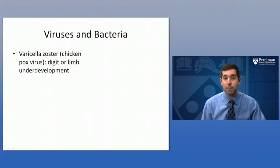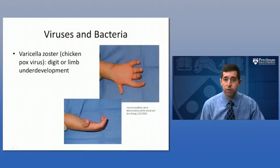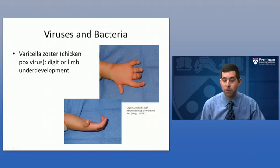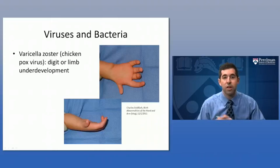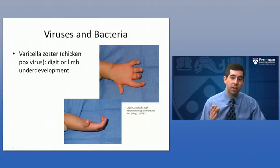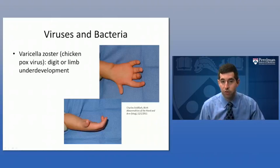Viruses and bacteria can play a major role in extrinsic deformations. Varicella zoster — the chickenpox virus — can cause underdevelopment of the digits or the limb. For example, we see an undeveloped thumb caused by exposure to varicella zoster while the child was in utero. The mother contracts the virus, which then crosses the placenta from the mother's blood supply to the developing child's blood supply.